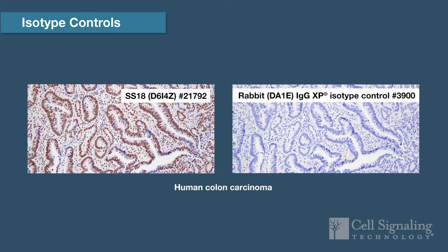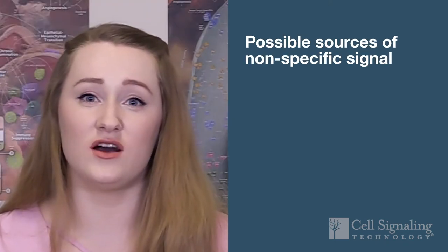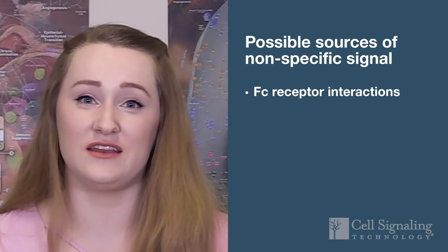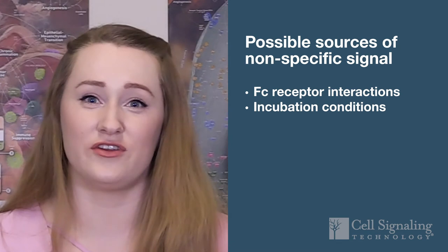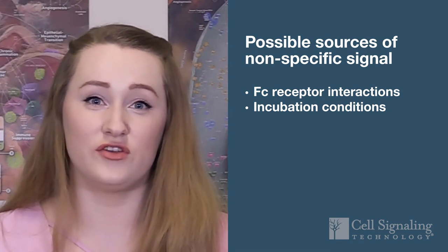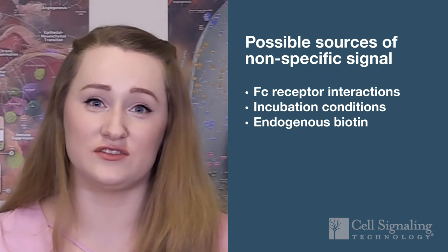An isotype control is a type of negative control. You should choose the same isotype and apply it at the same concentration as your experimental antibody. If you do observe staining with an isotype control, this indicates at least some of the signal from the primary antibody is not specific. This could be caused by Fc receptor-mediated interactions, sometimes called backwards binding, or general stickiness of your incubation conditions. If you're using biotin-based detection, endogenous biotin in the tissue can also contribute.